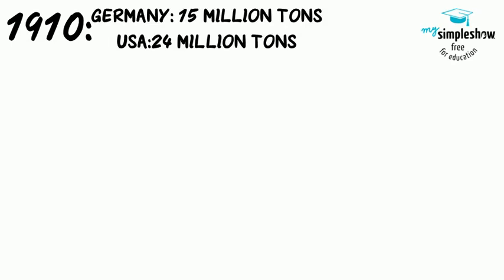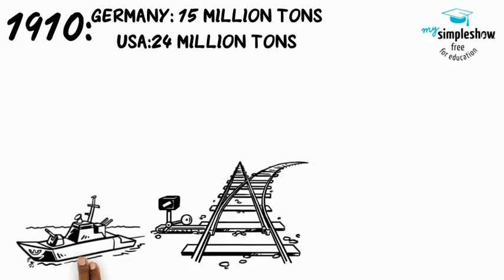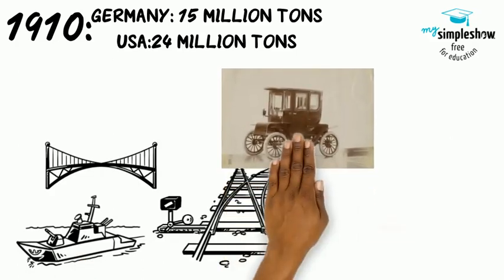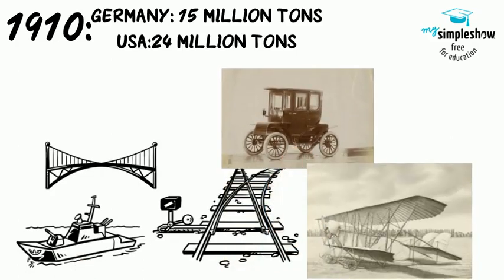By 1910, Germany was producing 15 million tons and the U.S. was producing 24 million tons of steel, helping build the 20th century with ships, rails, bridges, tools, cars, planes, and skyscrapers.